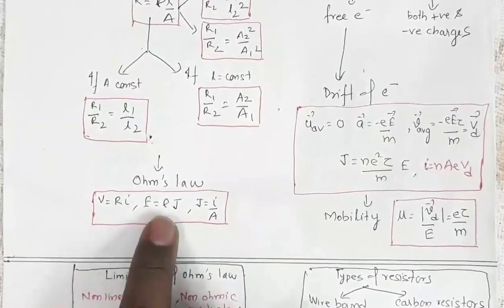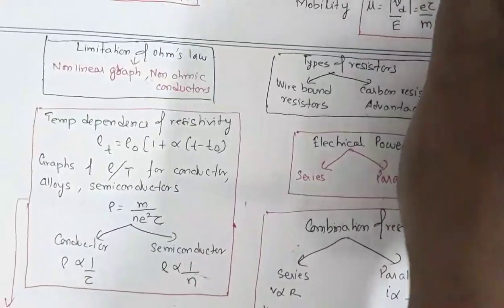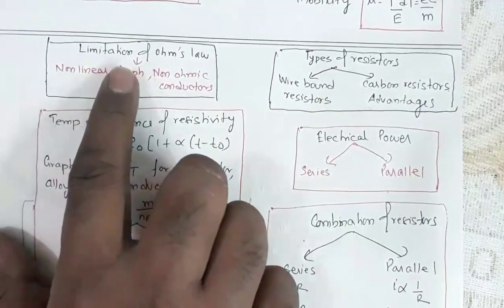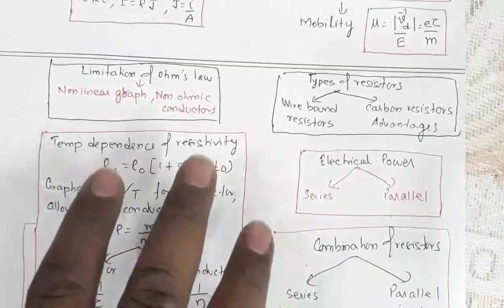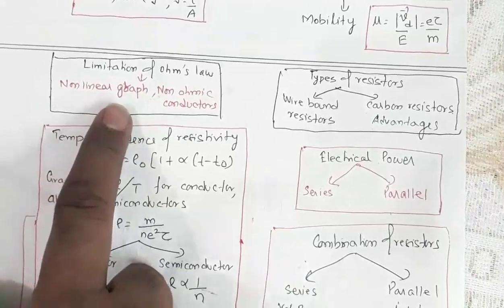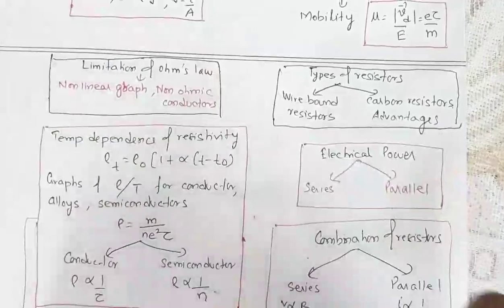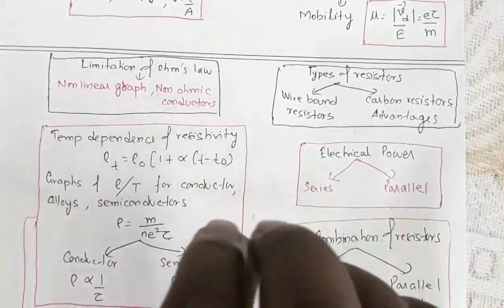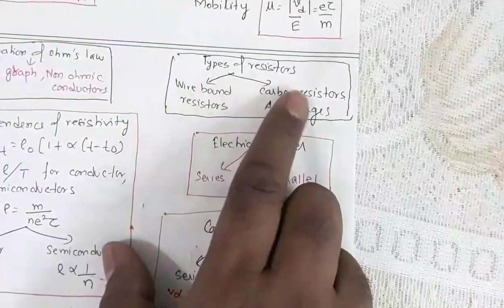Next are the limitations of Ohm's law. If a conductor follows Ohm's law, you get a linear relation between voltage and current. For non-linear graphs, those are non-ohmic conductors not following Ohm's law. Ohm's law is not a universal law — it is followed only by ohmic conductors; non-ohmic conductors do not follow it.